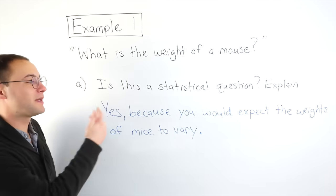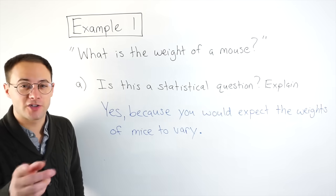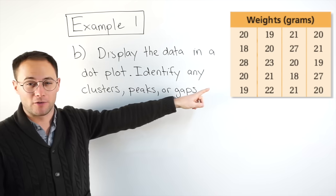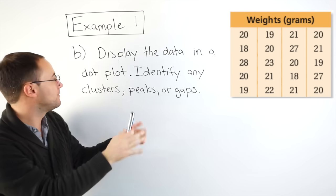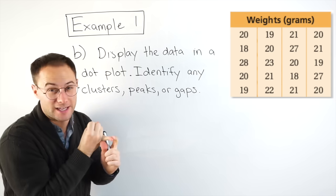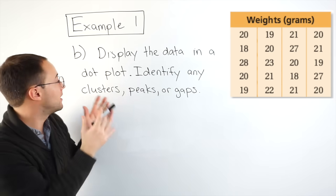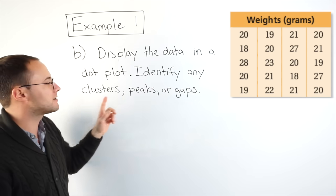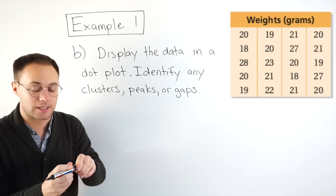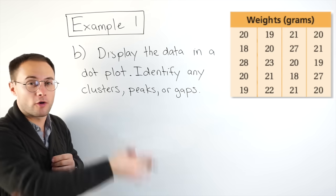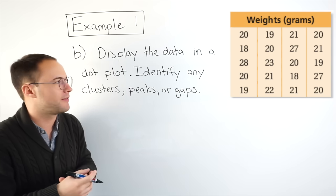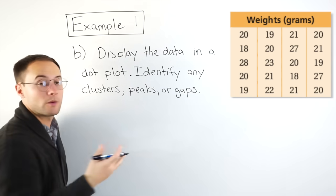So, our answer, yes, because you would expect the weight of mice to vary. Let's try part B. Okay, part B. A dot plot is basically, you have a number line. It could be horizontal or vertical. And then you use dots to show where the different data values are. It's kind of like a bar graph, except with dots instead of bars.